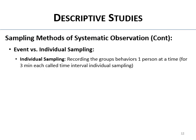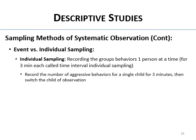Individual sampling is recording group behavior one person at a time — for example, recording each person's behavior for three minutes each, then switching to the next kid. You record the number of aggressive behaviors for a single child for three minutes, then switch to the next kid for three minutes, and so on. This is called a time interval individual sample.